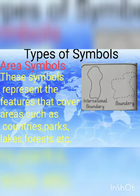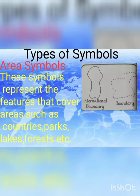Let's start with area symbols. Area symbols ہمیں بتاتے ہیں کسی بھی انٹرنیشنل باؤنڈری یا ڈیفرنٹ باؤنڈری جو کہ ہماری کنٹری میں ہے اس کے سیمبلز جو میپس پر ہوتے ہیں وہ ایریا سیمبلز ہوتے ہیں۔ These symbols represent the features that cover areas such as countries, parks, lakes, forests, etc.